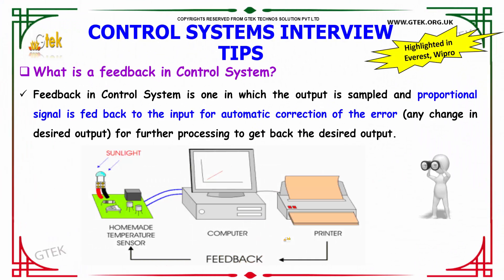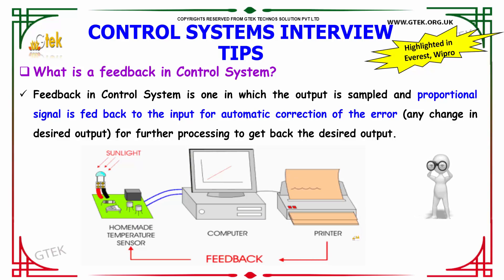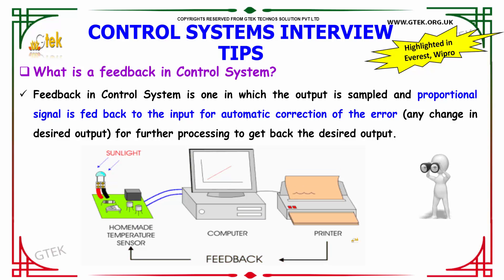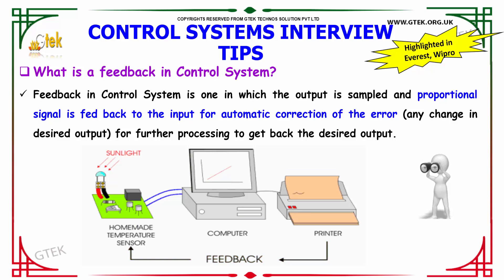What is the feedback in a control system? Feedback in a control system is one in which the output is sampled and a proportional signal is fed back to the input for automatic correction of the error — that is, for further processing to get back the desired output.